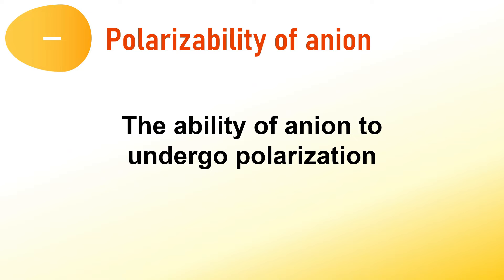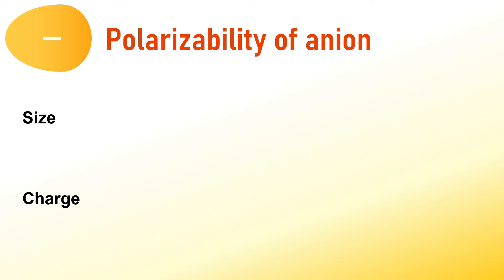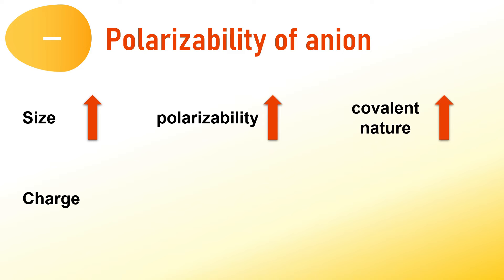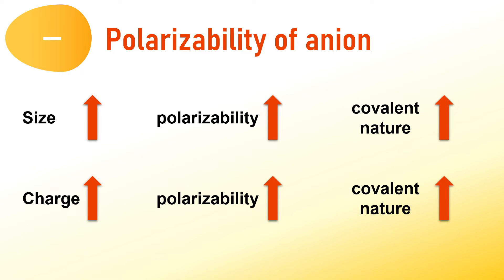The next factor to consider is the polarizability of the anion. This term refers to the anion's capacity to undergo polarization, or the distortion of electron density around it. The polarizability of the anion is also influenced by two key factors: size and charge. For anions, polarizability increases as their size increases. Larger anions are more susceptible to having their electron density distorted. Consequently, as the size of the anion increases, its polarizability also increases, leading to a higher level of covalent character in the bond. And just as with cations, the polarizability of anions also increases with an increase in their negative charge. Indeed, a higher negative charge leads to increased electron density, thereby intensifying the polarization effect in the chemical bond.